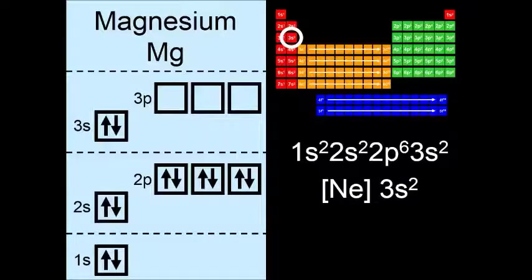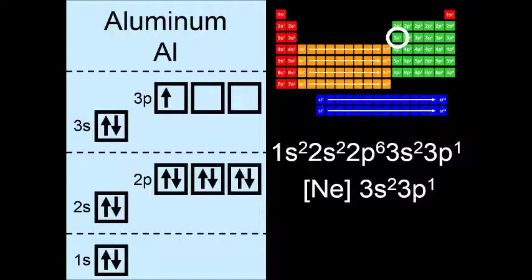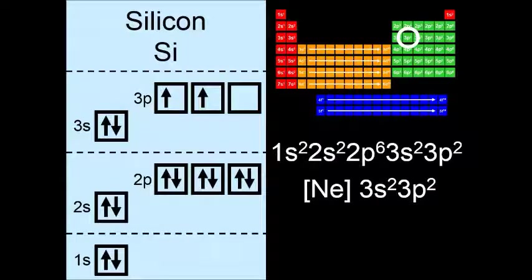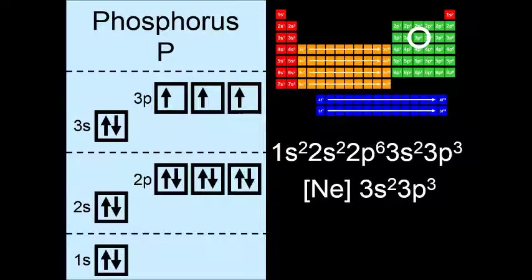Now we're going to fill the 3p sublevel. So everything from aluminum to argon. So here's aluminum ending with 3s2 3p1. And silicon, again following Hund's rule. And then phosphorus. So neon 3s2 3p3.